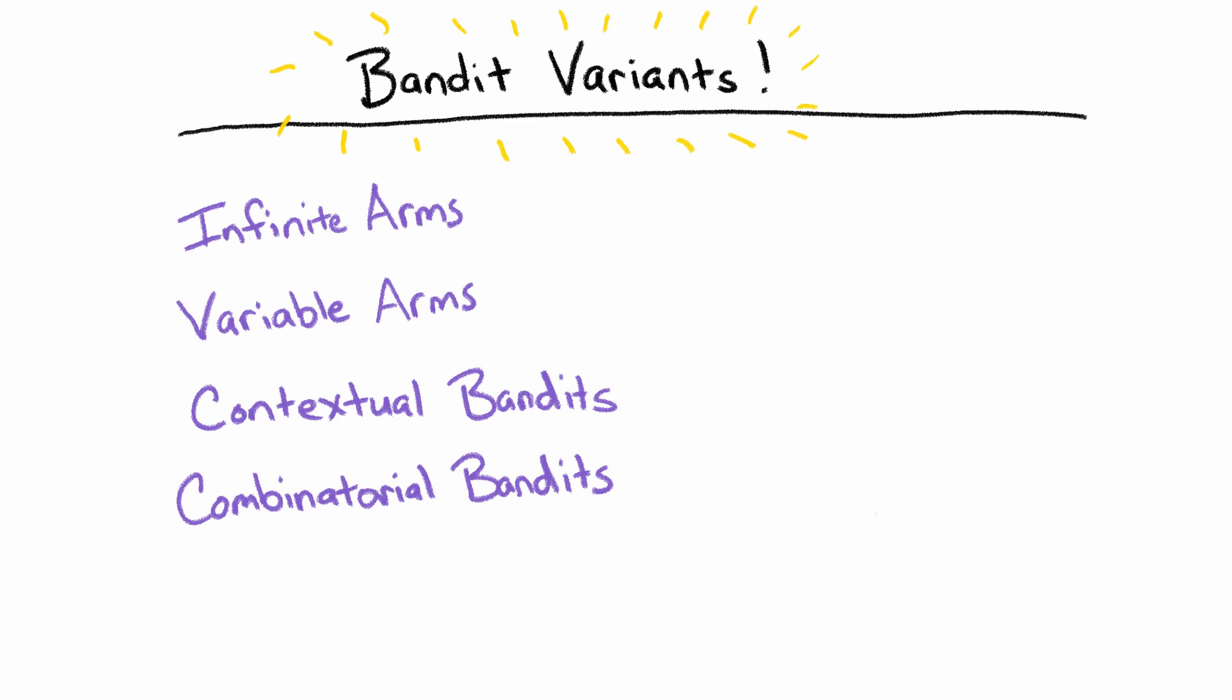What if, instead of a simple decision of pulling one slot machine arm, our only option was to pull three at a time and observe the cumulative reward? How might that change our overall approach?